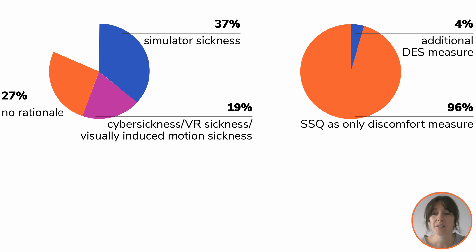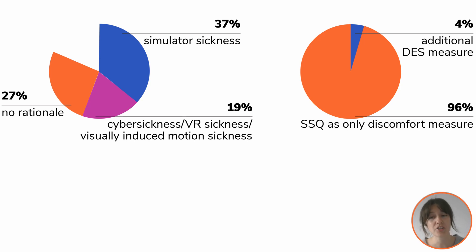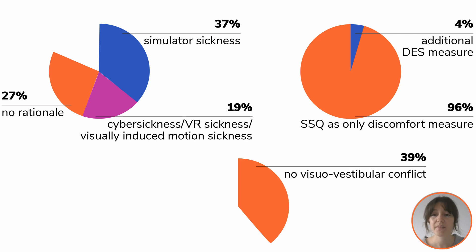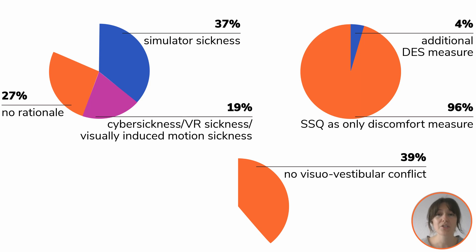Furthermore, in 96% of the papers, the SSQ was the only measure of discomfort employed. And in only 4% of the papers, an additional measure, namely digitalized strain, was reported. Lastly, in 39% of the papers, no visual-vestibular conflict was present, which is known to be the main cause of simulator sickness.